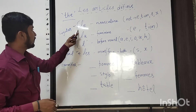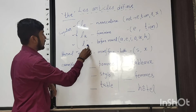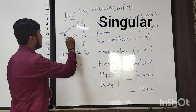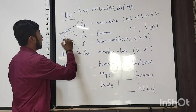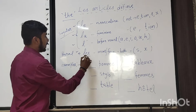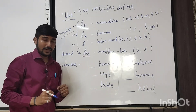The first three — le, la, and l'apostrophe — are singular definite articles. And les is the plural definite article.